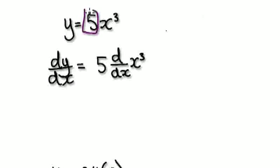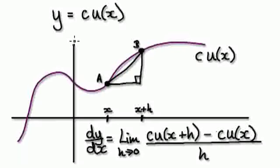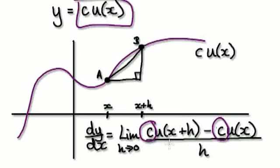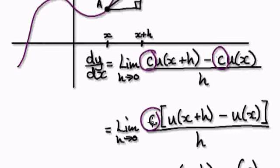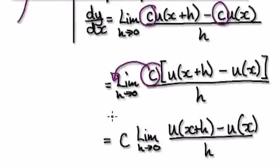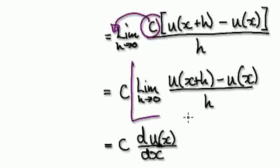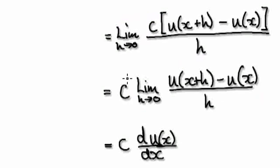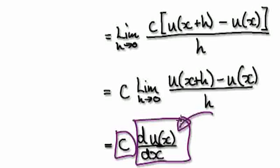When you want to differentiate a constant times a power function, you can just concentrate on differentiating x to the power of 3. The reason why you're able to do that is you start out with the limit definition, you follow it through, and you can see that this c is in common — you factor it out, and then you can take this c out here. And then this whole expression is really the true gradient of u(x). In our case, u(x) was x to the power of 3. Just know that you can take the constant out and concentrate on differentiating the function on its own.